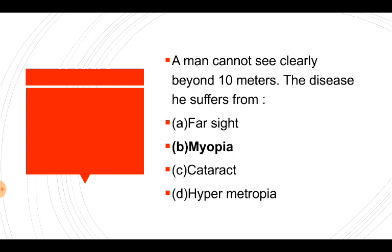A man cannot see clearly beyond 10 meters — the disease he suffers from is short sight, or myopia. A person can't see a victim beyond 10 meters. This is short-sightedness, myopia.